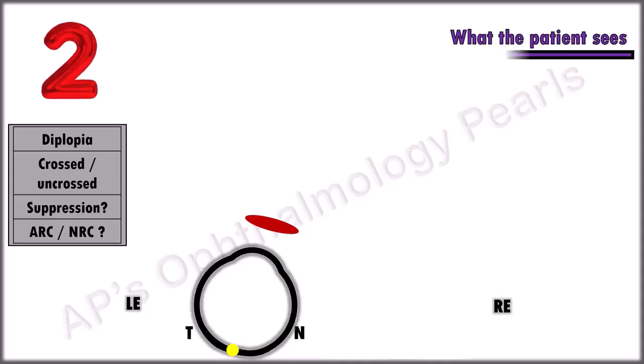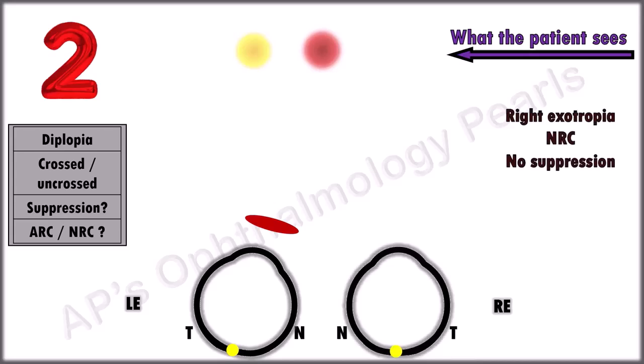Scenario 2. Diplopia is present. This is a crossed diplopia. There is no suppression and this is normal retinal correspondence. So this is a right exotropia with normal retinal correspondence and absence of suppression.